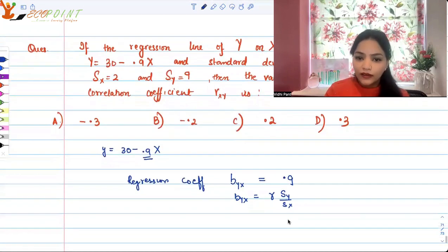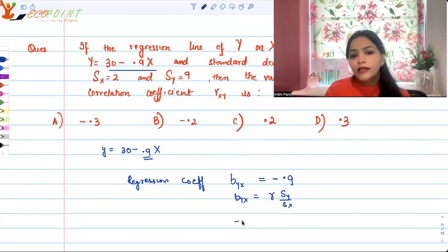So this is what b_yx is, which is called the regression coefficient of y on x. Now what available data do we have? We have b_yx, actually sorry, this is 30 minus, so it's minus 0.9. So minus 0.9 is b_yx.